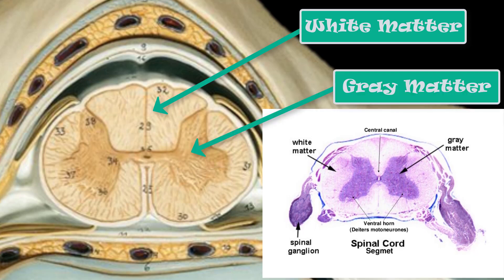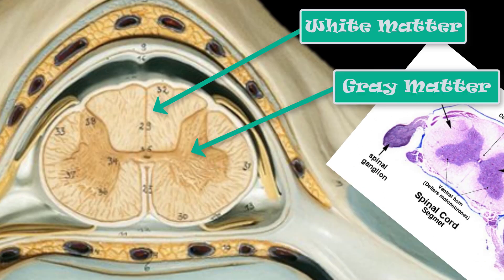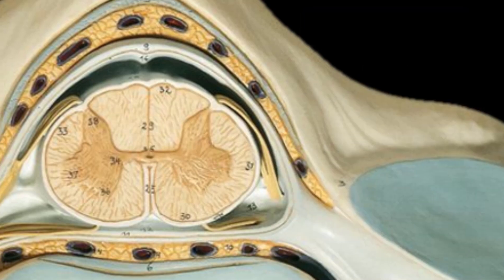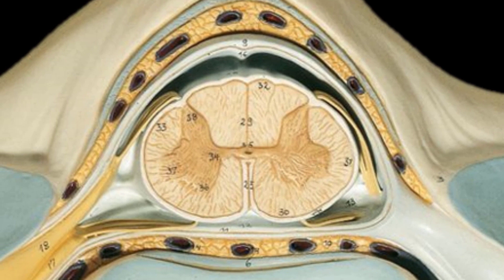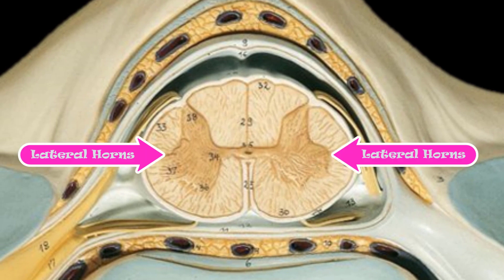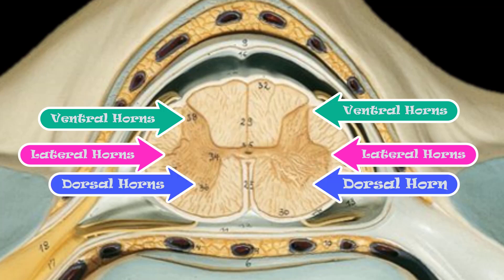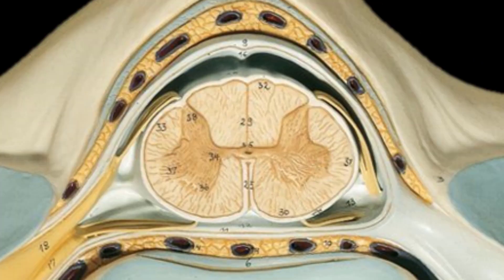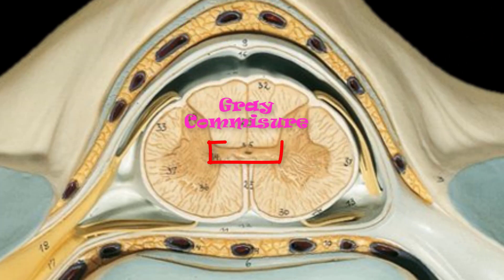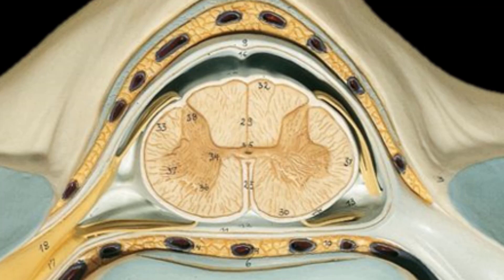In the cross section of the spinal cord we can see the white matter and the gray matter. The gray matter of the spinal cord makes kind of a butterfly shape. The gray matter consists of the lateral horns, the ventral horns, and the dorsal horns. The section that connects the gray matter from either side of the spinal cord together is the gray commissure.